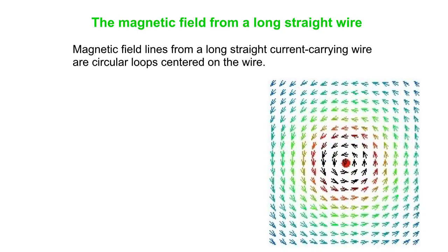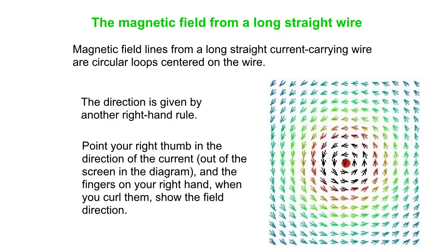What we notice here is that magnetic field lines are circular loops centered on the wire. The direction is given by the right-hand rule. Your thumb on your right hand goes in the direction of the current, out of the screen in this case. The fingers, when you curl them, show the field direction. It shows which way the field curls around the wire.